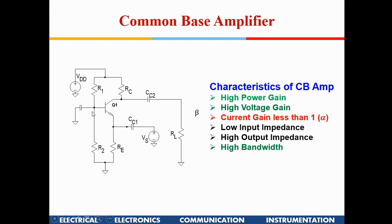In RF applications, when coupling an antenna to an amplifier, antennas are generally low-impedance devices — around 50 ohms. To ensure maximum power transfer from the antenna to the amplifier, the CB amplifier is a good match because its input impedance is on the order of a few ohms. It also has high output impedance and, importantly, high bandwidth — which is the highlight of the CB amplifier.